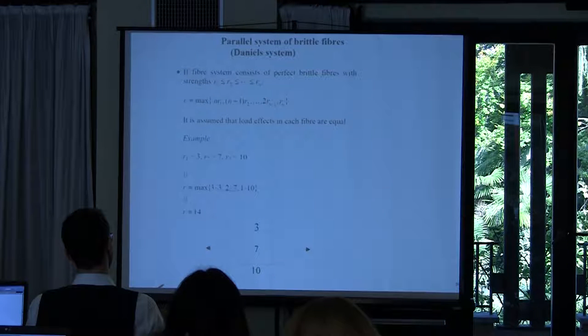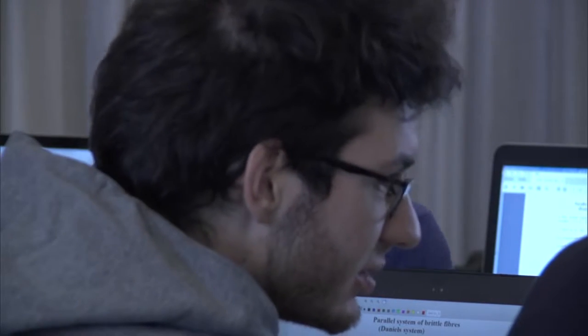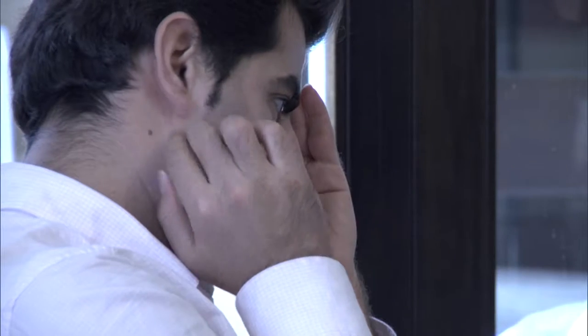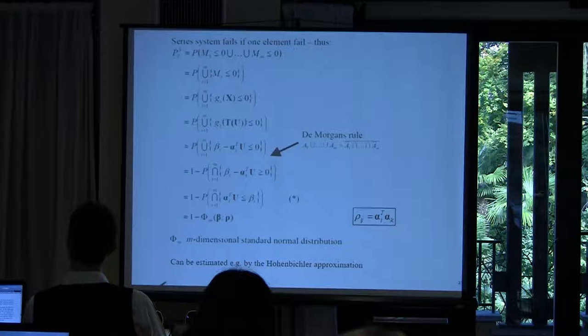There are two levels of correlation to distinguish. One is the correlation between the stochastic variables themselves in the x-vector. The other is the correlation between failure modes, which arises from how limit state equations are formulated — specifically, common stochastic variables shared between limit state equations for different components create correlation between failure modes. For example, the same wind load acting on a building appears in almost all limit state equations, creating correlation between failure modes even if material strengths are independent.